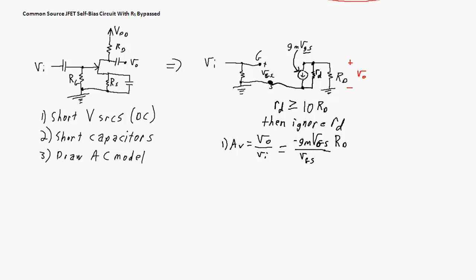So for the voltage gain, Vout over Vin: the VGS terms cancel from numerator and denominator, giving a voltage gain of negative GM times big RD in parallel with little RD. If you know the little RD value, it's worth including since it doesn't make the calculation much harder.